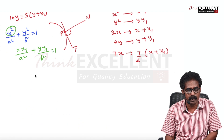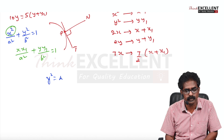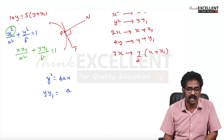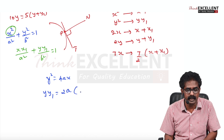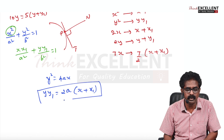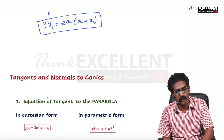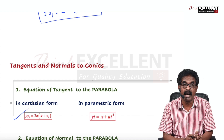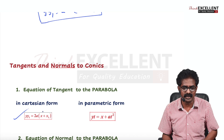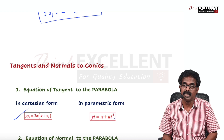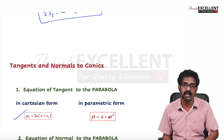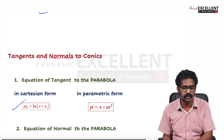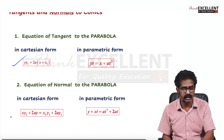For parabola Y² = 4AX: Y² becomes YY₁, and 4X = 2·2X, where 2X becomes X+X₁. So the equation of tangent to the parabola in Cartesian form is derived by substitution. We study both Cartesian form and parametric form. The parametric form of the tangent to the parabola is yt = x + At². These are the formulas to find the equation of tangent. For the normal, we also study both Cartesian and parametric forms.